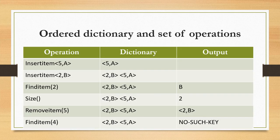Now let us see the ordered dictionary and set of operations. We have three columns: operation, dictionary, and output. First, insert item (5, a) — (5, a) is inserted into the dictionary. Second, insert item (2, b) — (2, b) is inserted.